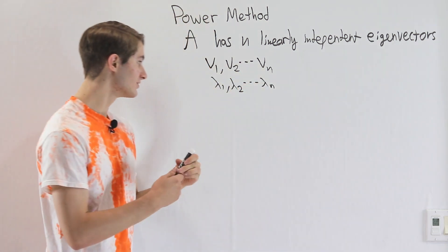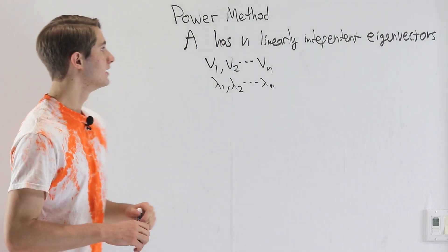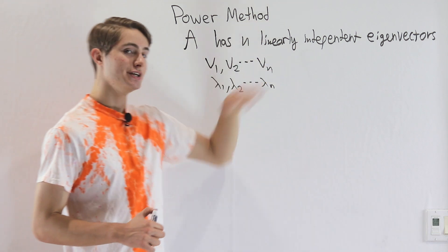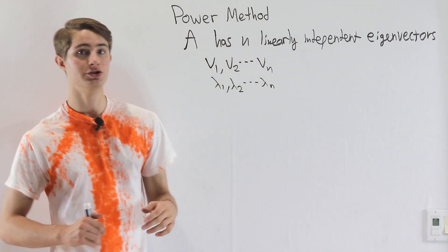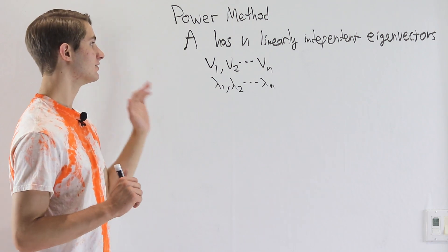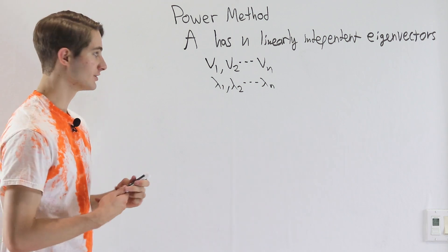It's possible that, for example, lambda 1 equals lambda 2, but we know that the eigenvectors are going to be different. Now there aren't always n linearly independent eigenvectors, but there are a few ways to extend the power method to those special cases. In this video, we're only going to talk about our general case of n linearly independent eigenvectors.